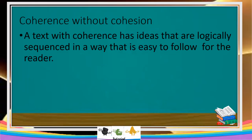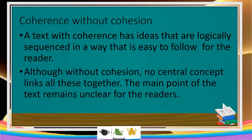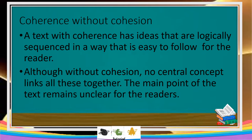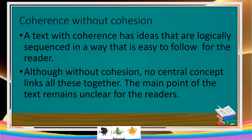This is an example of coherence without cohesion. A text has ideas that are logically sequenced in a way that is easy to follow for readers. However, without cohesion, no central concept links all of it together, and the main point of the text remains unclear for the reader. So the example above is lacking cohesion — though there is coherence, there is a lack of cohesion.